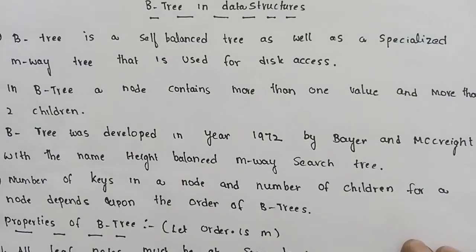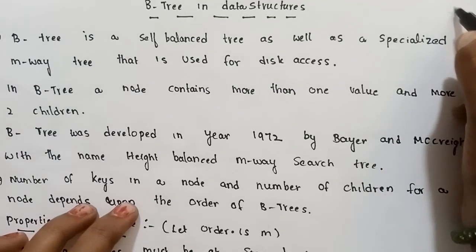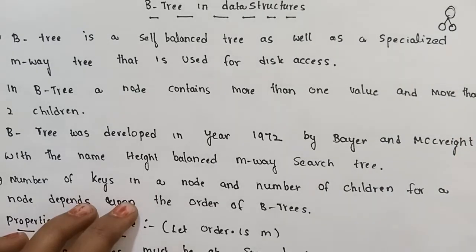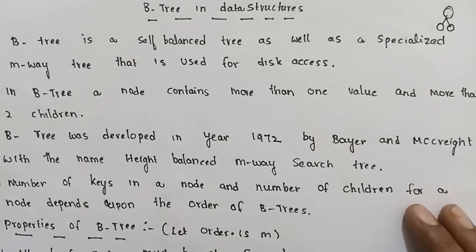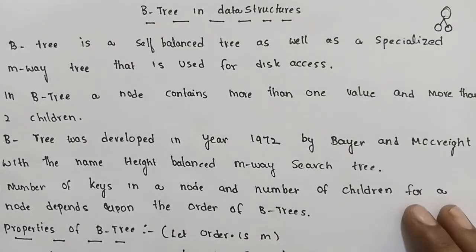In my previous video, we discussed binary tree and binary search tree. Let me show you the node. In a binary tree, a node has a maximum of 2 children — it can be 0, 1, or 2. That is the binary tree, and binary search tree is also based on that.